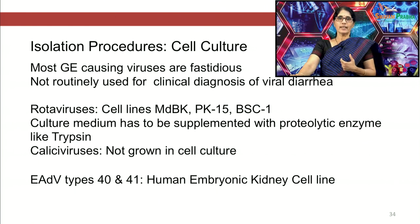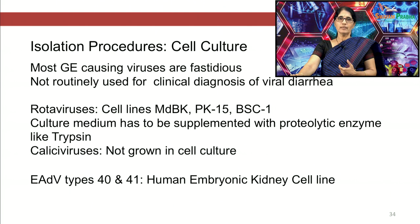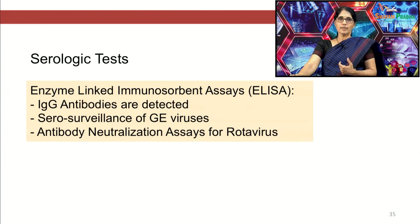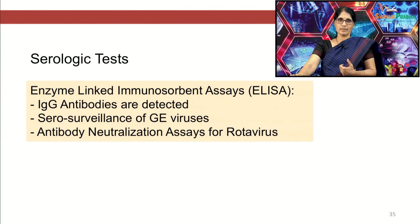Rotaviruses can be cultured in cell lines like MDBK, PK-15 and BSC-1, with the culture medium supplemented with trypsin, but this is not routinely employed for diagnosis. Caliciviruses are not grown in culture. Enteric adenoviruses are fastidious unlike other adenoviruses, but can still be cultured in human embryonic kidney cell lines. Serologic tests using enzyme-linked immunosorbent assay are available for detection of IgG antibodies and are more suitable for sero-surveillance of gastroenteritis viruses. Antibody neutralization assays are available for rotavirus.